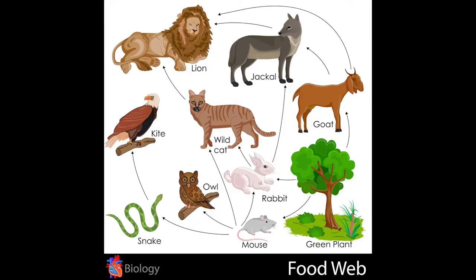For example, bunnies don't just eat grass, but they eat any types of vegetables, just like some other animals like mice. And eagles are not the only thing that could eat a bunny, but a wild cat could eat it. And then, a lion could eat that wild cat.